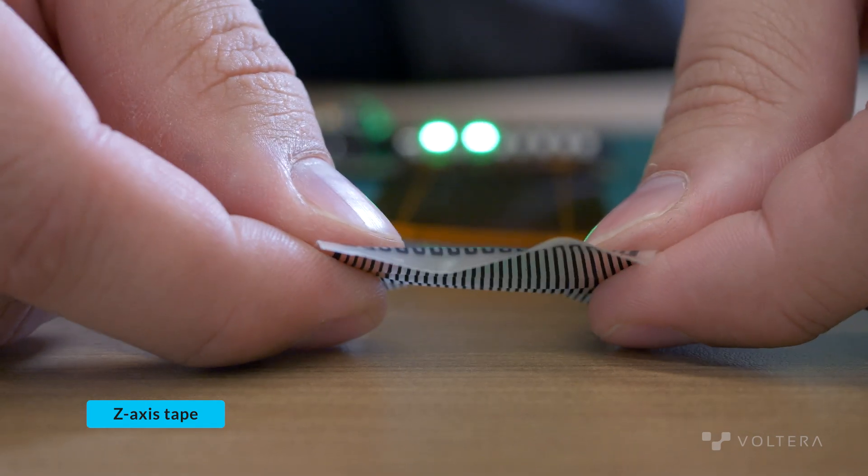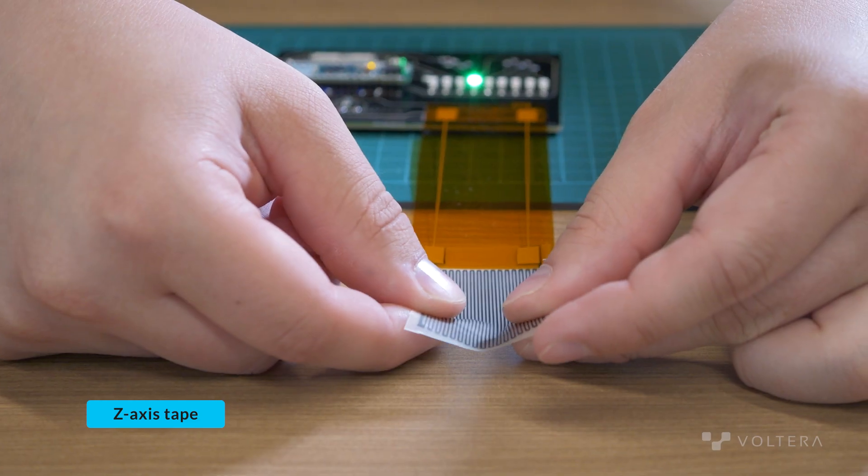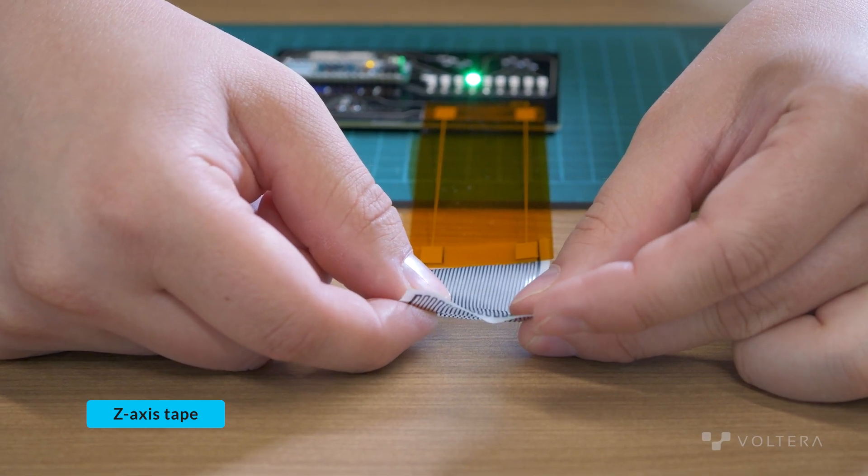Benefits of this method are that it's a quick and easy process and that the tape itself is flexible, unlike snaps or alligator clips. We see z-axis tape connections used in LCD screens, touch screens, display panels, and wearable sensors.